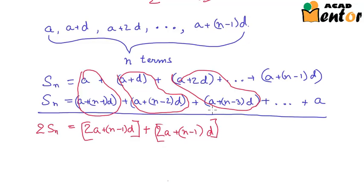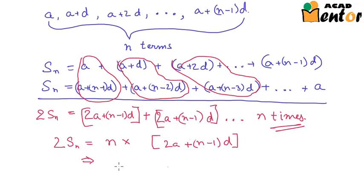Now again, we know that these were N terms. So you will get 2A plus N minus 1 into D how many times? N times. Hence, 2SN can be written as N multiplied by 2A plus N minus 1 times D. The sum of the first N terms would be N by 2 into 2A plus N minus 1 into D.